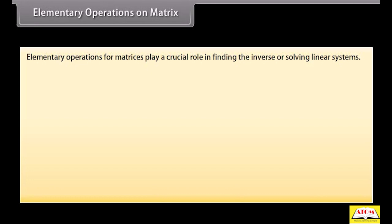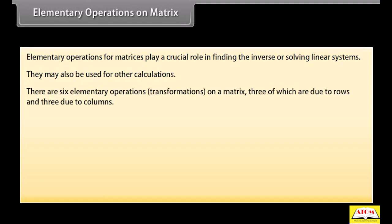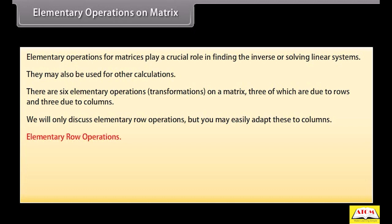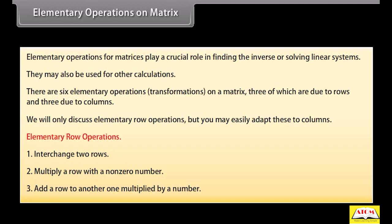Elementary operations on matrix: Elementary operations for matrices play a crucial role in finding the inverse or solving linear systems. They may also be used for other calculations. There are six elementary operations or transformations on a matrix, three of which are due to rows and three due to columns. We will only discuss elementary row operations. These are: interchange two rows; multiply a row with a non-zero number; add a row to another one multiplied by a number.